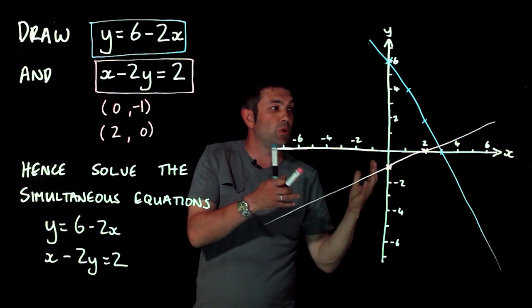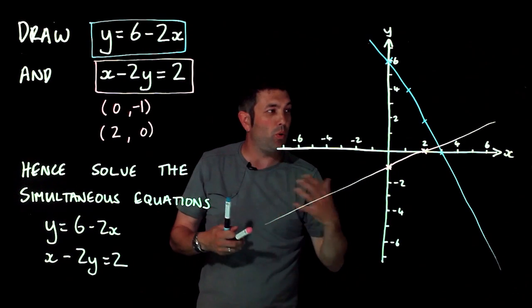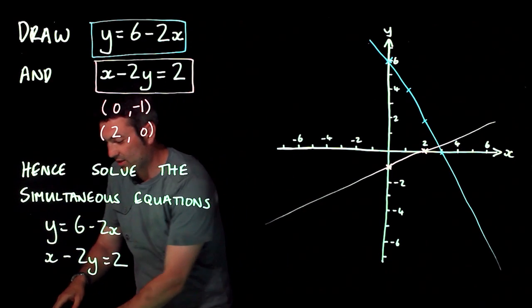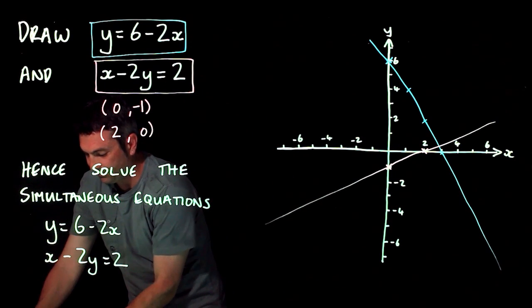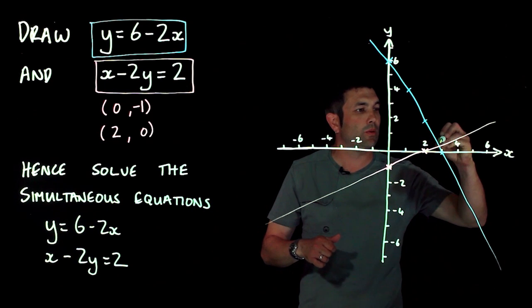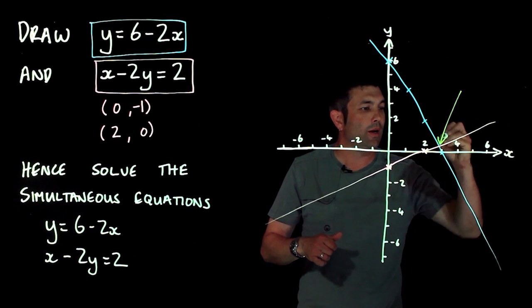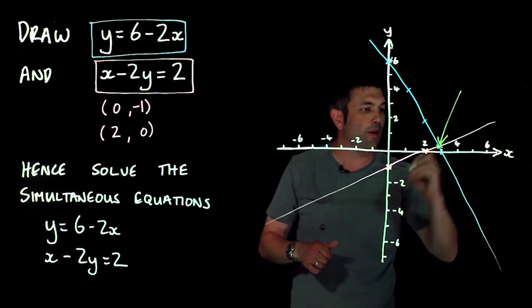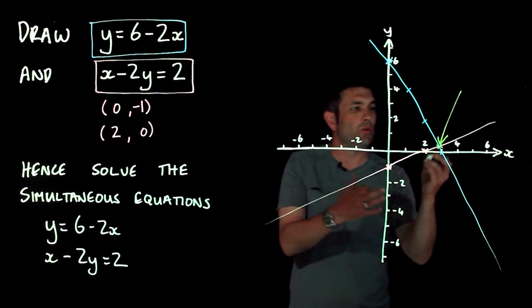So the point at which they cross are going to be the solutions to my two graphs. I'm going to do the answer in green, and that is this point here which I'm drawing a massive arrow to in green. This point here where the two graphs cross.